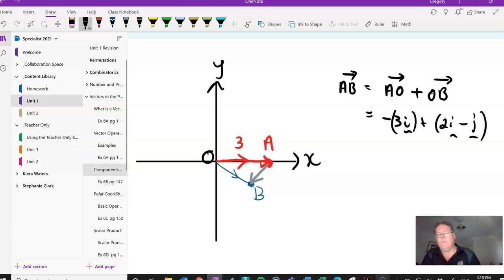Now, all of these are vectors, so I need to put my tildes in, and now I simply do the addition. Negative 3I plus 2I is negative 1I, and plus negative J, so it would be minus J.